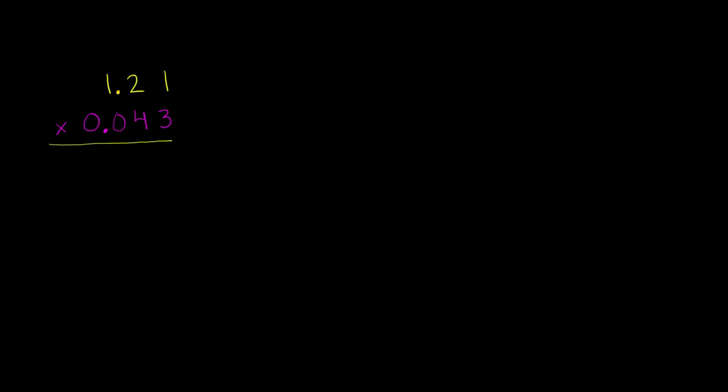So let's just think about a very similar problem, but one where essentially we don't write the decimals. Let's just think about multiplying 121 times 43, which we know how to do. So let's think about this problem first as kind of a simplification, and then we'll think about how to get from this product to this product.